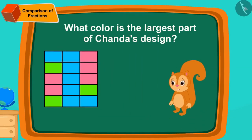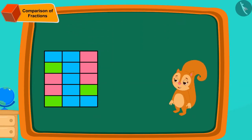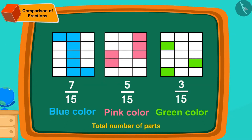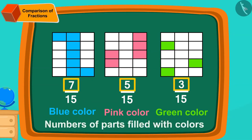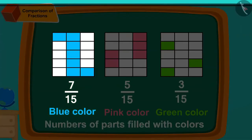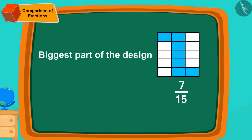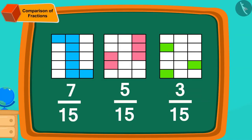Children, can you tell what color is the largest part of Chanda's design? Let us look at the number of parts of all three colors. The total number of parts in the fractions of all colors is exactly the same. Therefore, we will look at the numbers of parts filled with colors. The number of blue colored parts — seven — is the highest. Hence, the biggest part of the design, seven fifteenths, is filled with blue color. So the fraction seven fifteenths is bigger than both five fifteenths and three fifteenths.